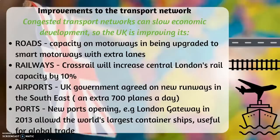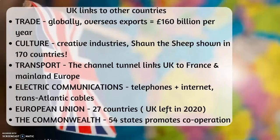UK links to other countries. Trade: globally, overseas exports are £160 billion per year. Culture: there are many creative industries, especially in the creative capital, London. For example, Shaun the Sheep was shown in 170 countries. Transport: the Channel Tunnel links the UK to France and mainland Europe. Electronic communications: telephones, internet, and transatlantic cables allow communication between countries.